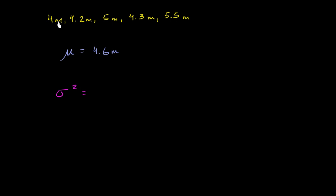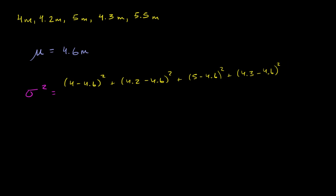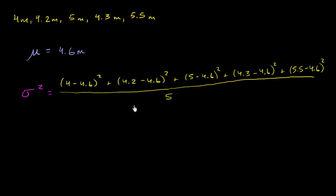All we need to do is find the distance from each of these points to our mean, then square them, and take the mean of those squared distances. So it's going to be (4 − 4.6)² + (4.2 − 4.6)² + (5 − 4.6)² + (4.3 − 4.6)² + (5.5 − 4.6)², and then we divide all of that by 5 to get our population variance.